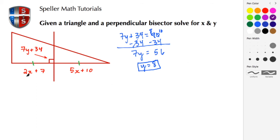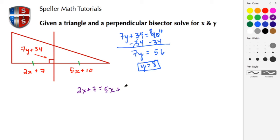Now let's work on the two congruent segments. Because they are congruent, we're able to set these two expressions equal to each other, and then we can solve for X and figure out the exact length of each of those segments. So here we have 2X plus 7 is equal to 5X plus 10.